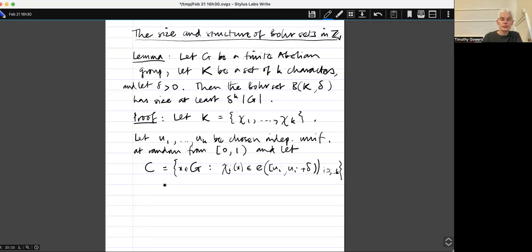Now if I fix X and i, the probability that Chi i of X belongs to this arc here is exactly delta. And since these probabilities are independent for i equals 1 to K.